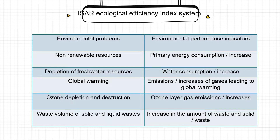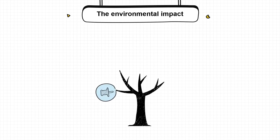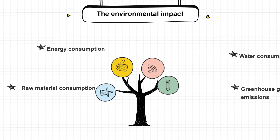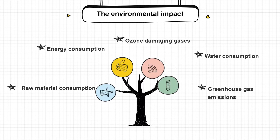Some examples of environmental issues and environmental performance indicators help us understand. Environmental impacts include energy consumption, raw material consumption, purified water consumption, greenhouse gas emissions, and ozone-depleting gas emissions.